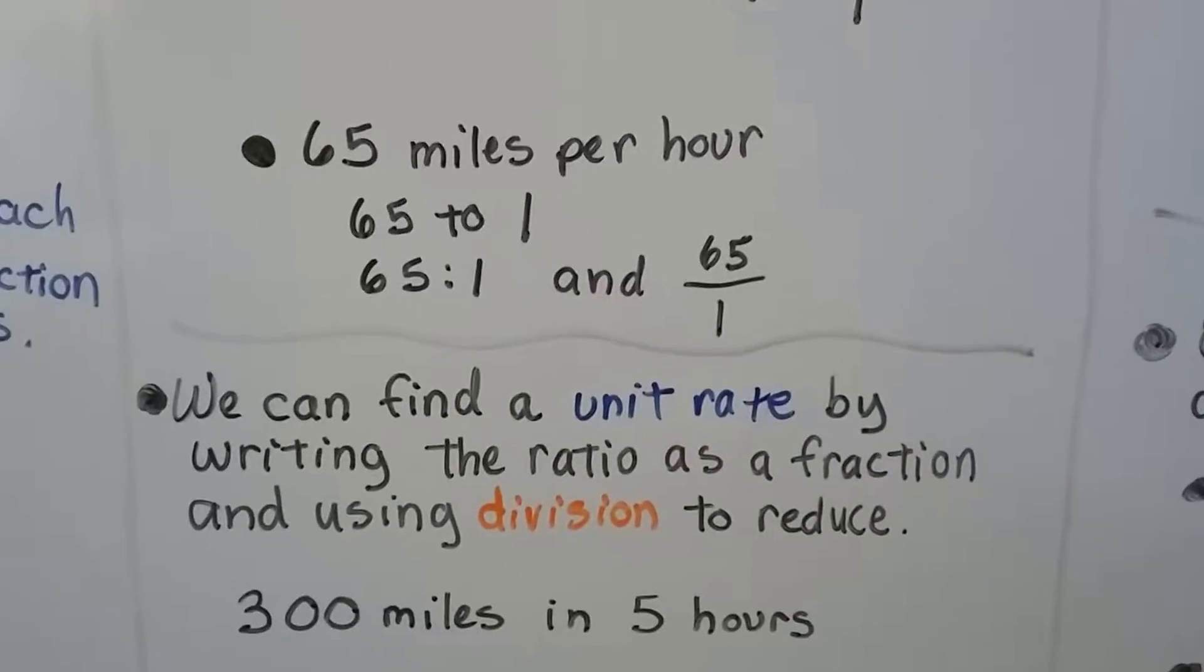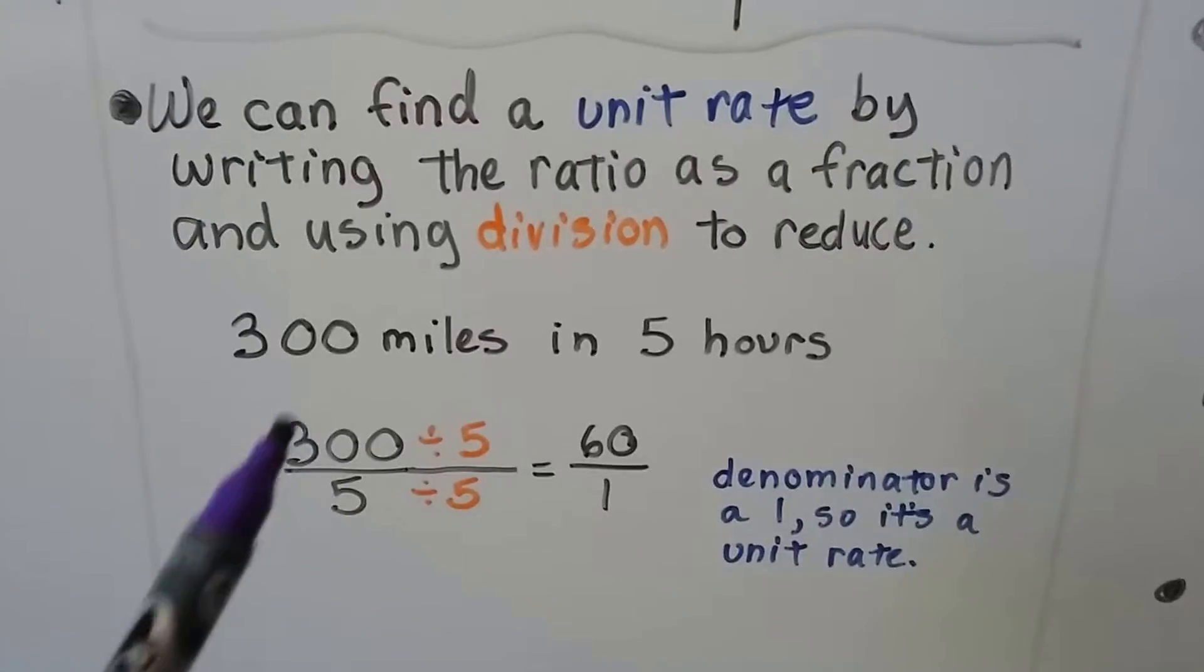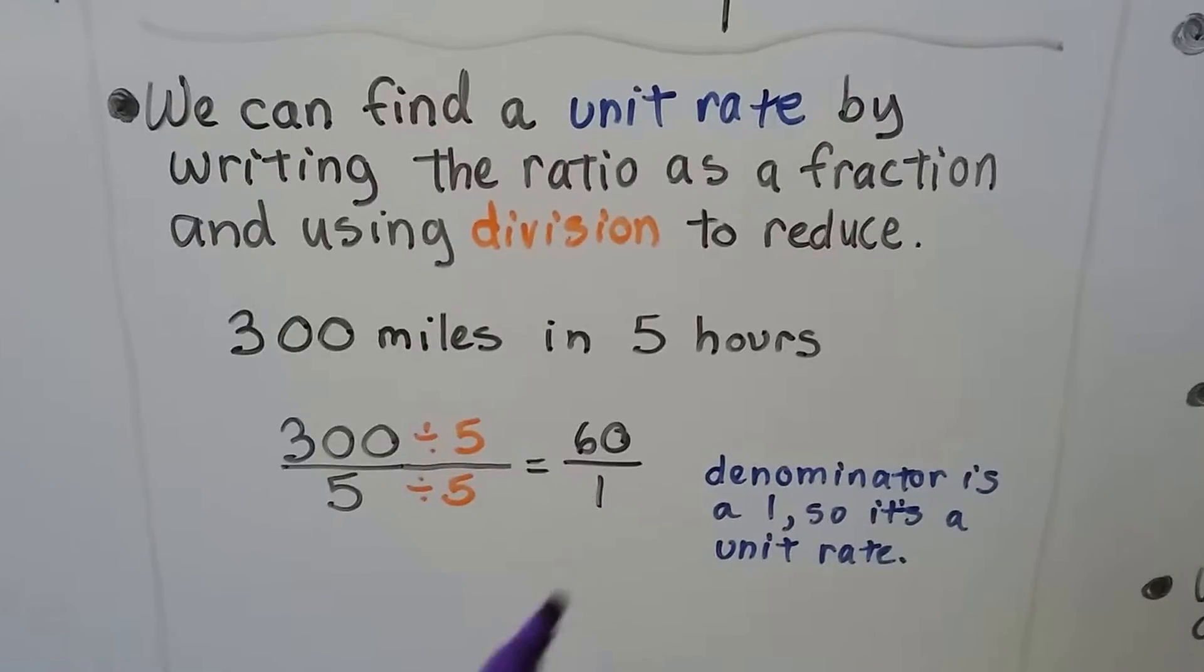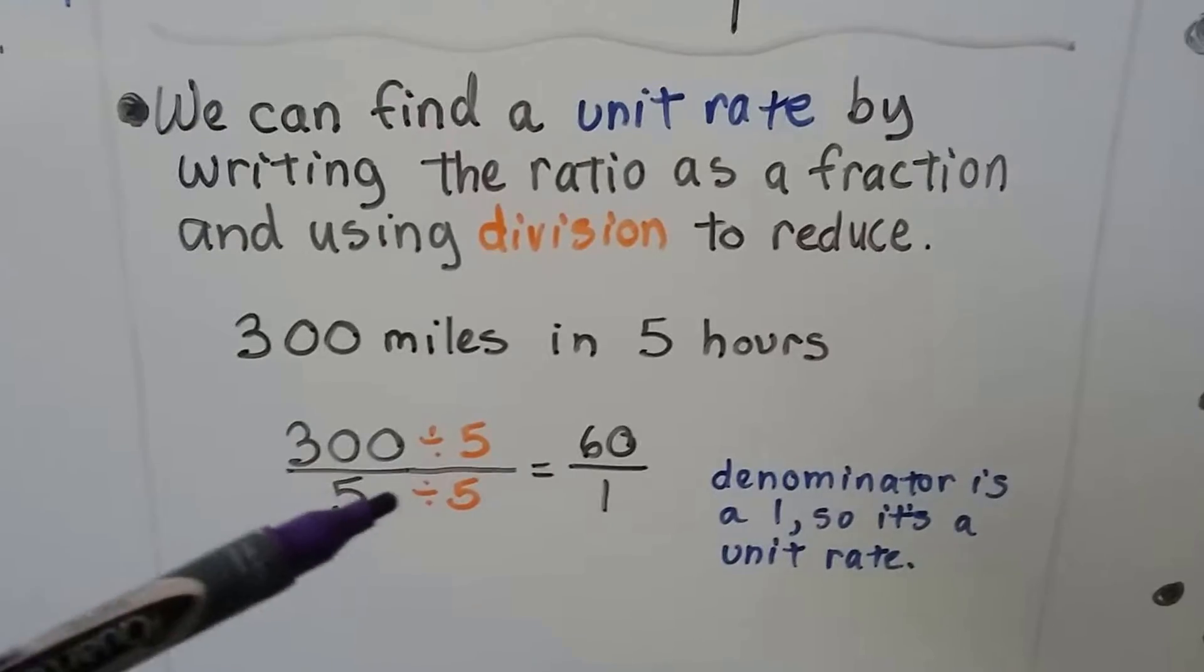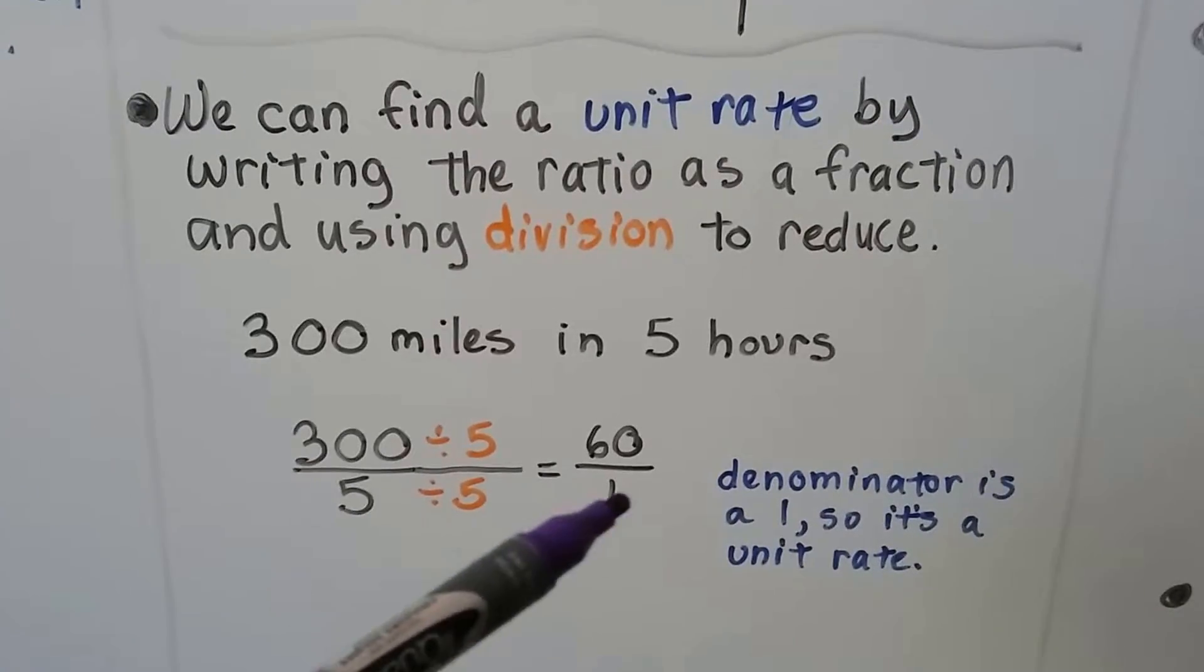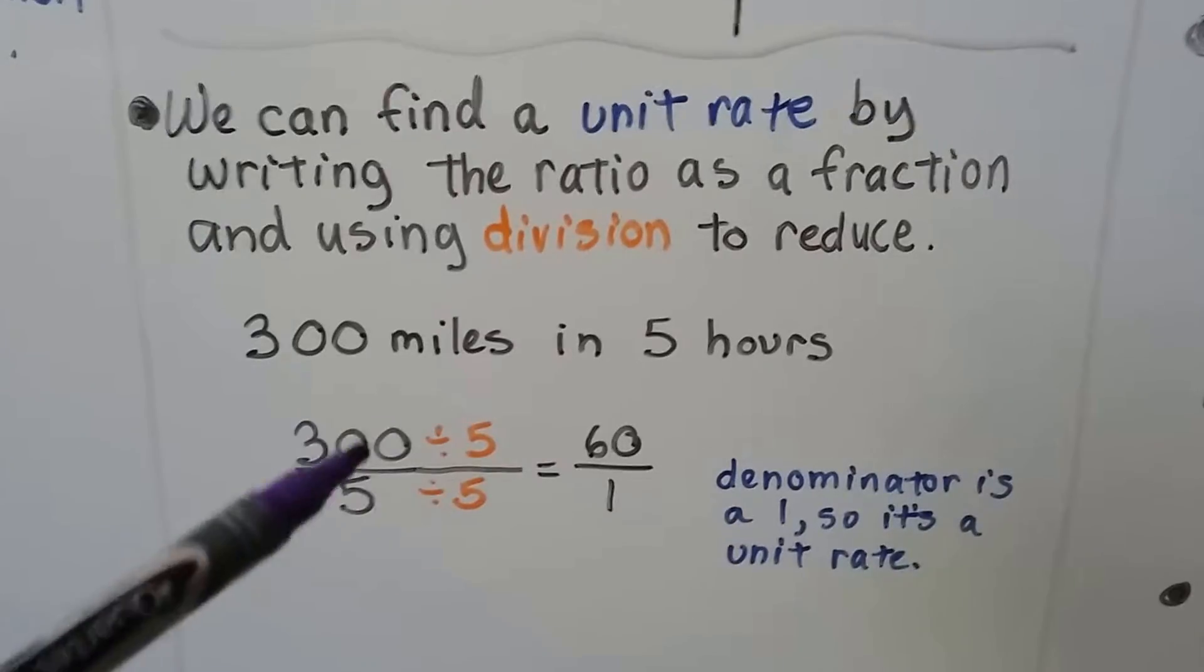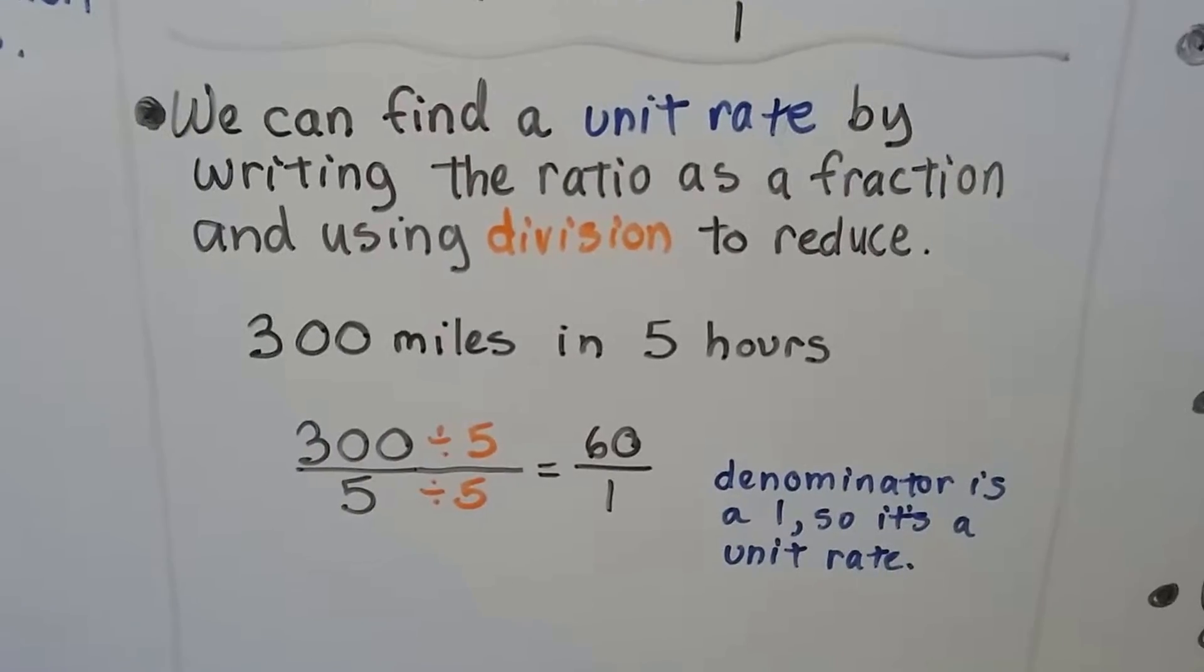We can find a unit rate by writing the ratio as a fraction and using division to reduce it. If we drove 300 miles in 5 hours and we needed to write it as a unit rate, that means the denominator is going to be a 1. We can divide by 5. 5 divided by 5 is 1, and now it's a unit rate. We have to divide the 300 by 5. 300 divided by 5 is 60. Our unit rate is 60 to 1.